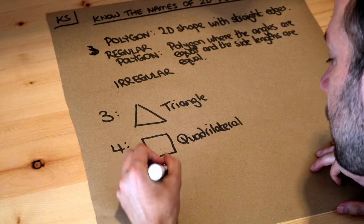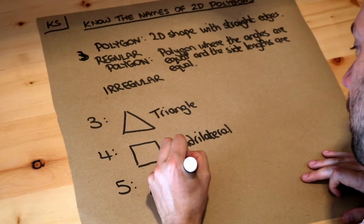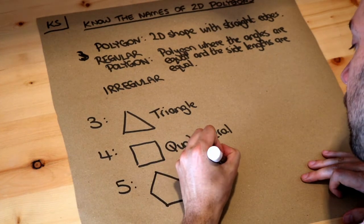What about if it has five sides? That is known as a pentagon. Pent meaning five.